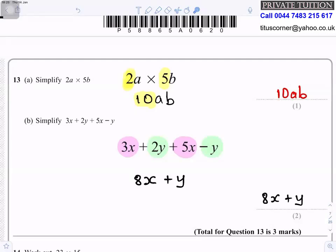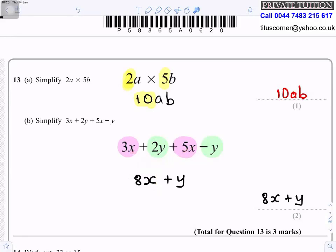Question 13: Simplify 2a × 5b. Multiply 2 × 5 = 10, then a × b = ab, giving 10ab. Simplify 3x + 2y + 5x − y. Collect like terms: 3x + 5x = 8x, and 2y − y = y, so the answer is 8x + y.